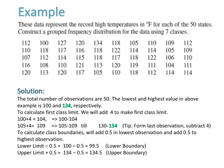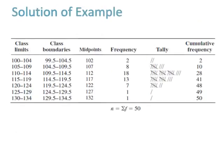After that, find class boundaries by subtracting 0.5 from the lower limit to get the lower boundary, and adding 0.5 to the upper limit to get the upper boundary. Then add the two class boundaries and divide by 2 to get the midpoint. Count how many values fall in each class limit range to find the frequency. Cumulative frequency is calculated by adding each frequency to the sum of its predecessors.